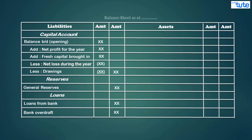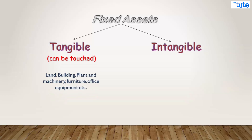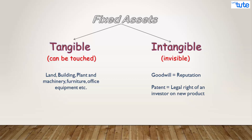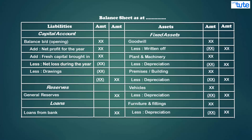On the asset side of the balance sheet, fixed assets are the first heading and include items like machinery, buildings, and trucks, which benefit the business for a long time. Fixed assets may be tangible or intangible. Tangible assets can be touched — for example, land, machinery, buildings, vehicles, and furniture. Intangible assets are invisible items like goodwill, trademark, and patents, which do not physically exist but benefit the business over a long period. Goodwill means reputation; a patent is the legal right of an inventor; a trademark is a registered name or symbol that only the owner can use. Depreciation is deducted from these fixed assets.